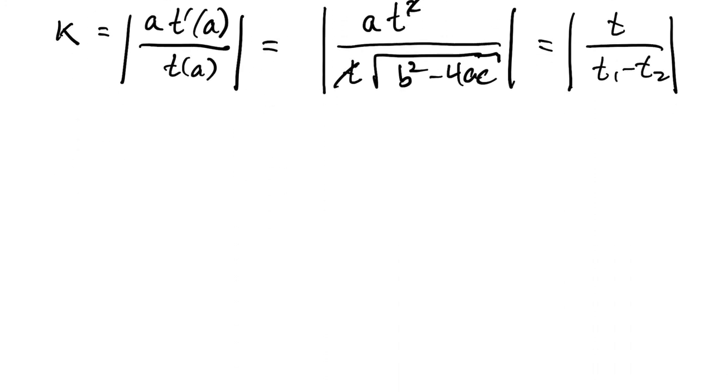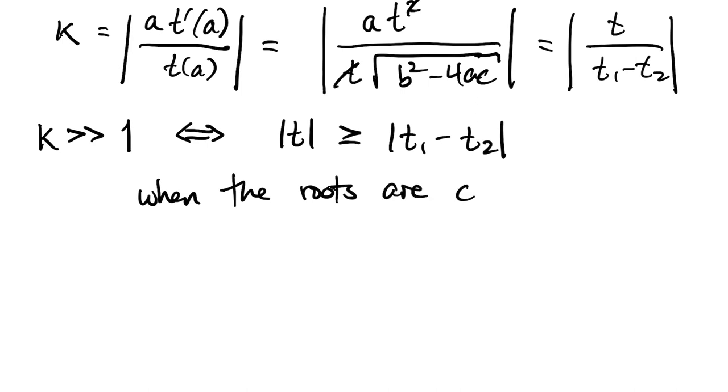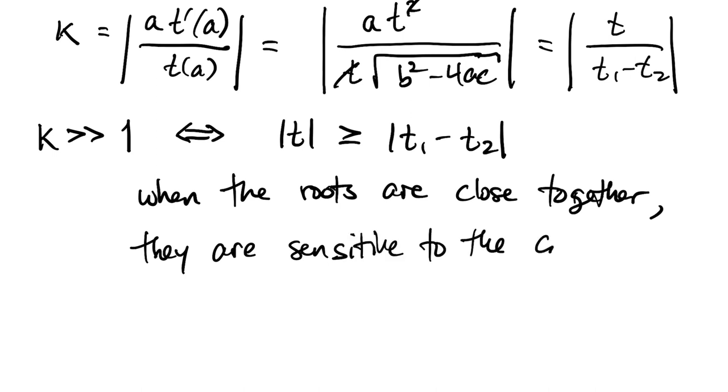The conclusion is straightforward. The condition number will be large when the root is much larger than the difference between the two roots. In other words, when the roots of a quadratic polynomial are very close together, we can expect them to be very sensitive to perturbations in the coefficients. This is a general phenomenon. It's not limited to quadratic polynomials. It's true of polynomials of all higher degrees as well.